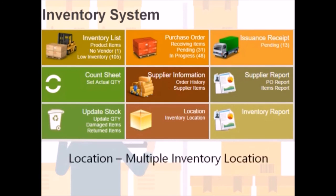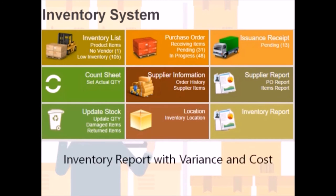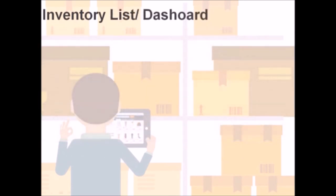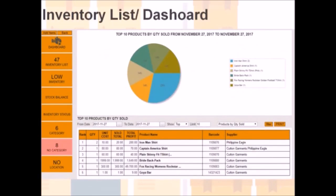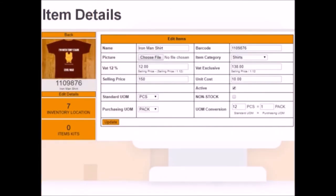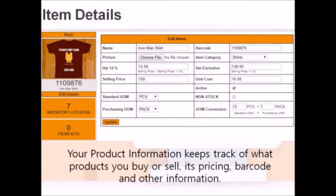Supplier report is used for billing items and consignee reports. Update stock lets the user add or subtract item quantities — especially used for updating quantities regarding returned and damaged items. Location lists all branches and stores for tagging where items are stored. Inventory report is used for quick report generation for variances and cost. Here's a quick look at the inventory dashboard, where we can see the best selling products at a given time.